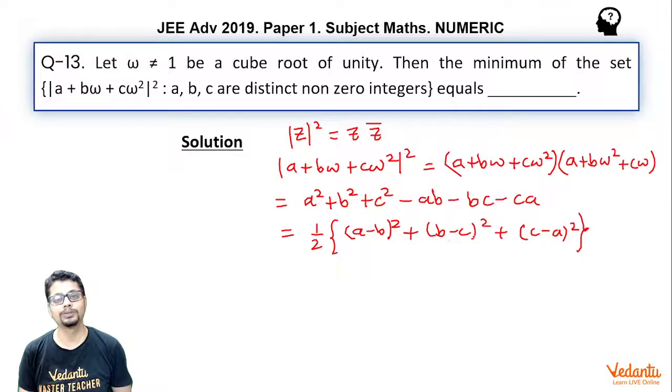Similarly b, c should be as close as possible and c, a should be as close as possible. So the best we can do to minimize, given that a, b, c are all distinct, is to take a, b, c as consecutive integers.